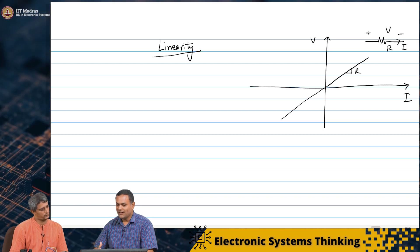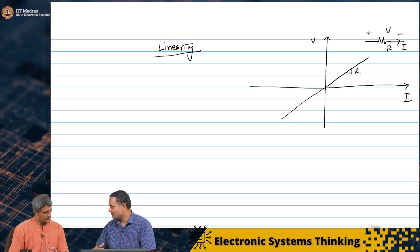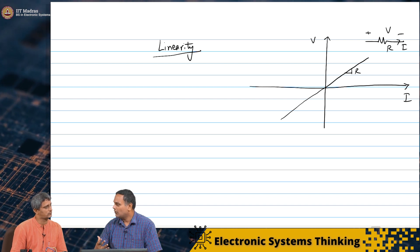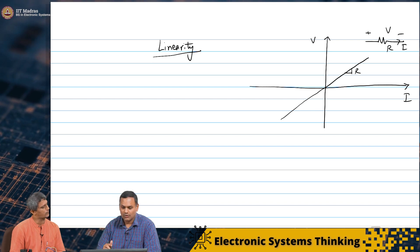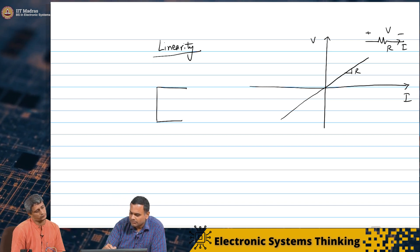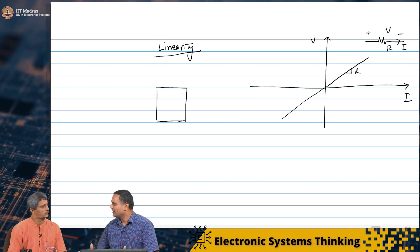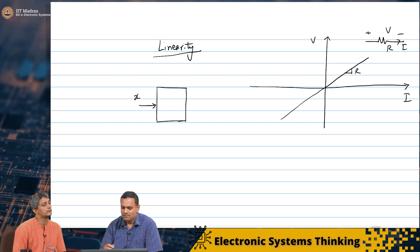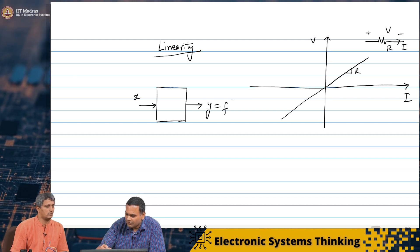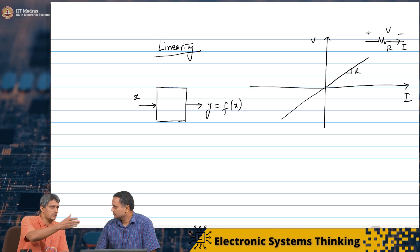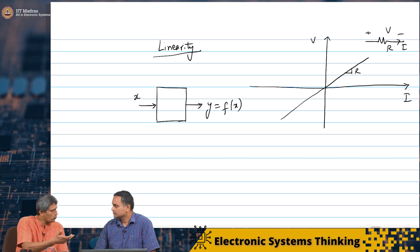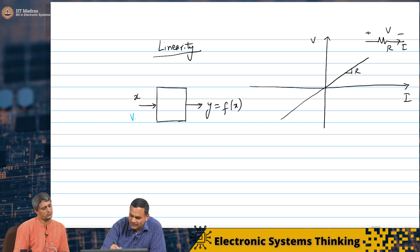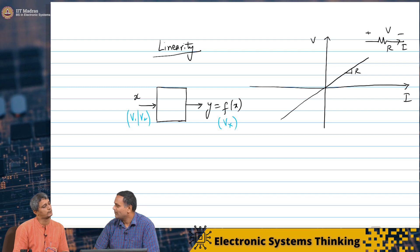Let us look at this a little bit. Maybe what we will do is approach this in a slightly more abstract fashion, then we will get down to the details of resistors. We will start with the abstraction of the network itself as some network N. We will say there is some network N — it is a block, it has some input. Normally in electrical terms this input is a voltage or a current, but we will just abstractly call it some input X. And the output is Y which is F of X. In the circuit we were looking at, X would be V1 or V2, and Y would be VX that we were measuring across the 1K ohm.